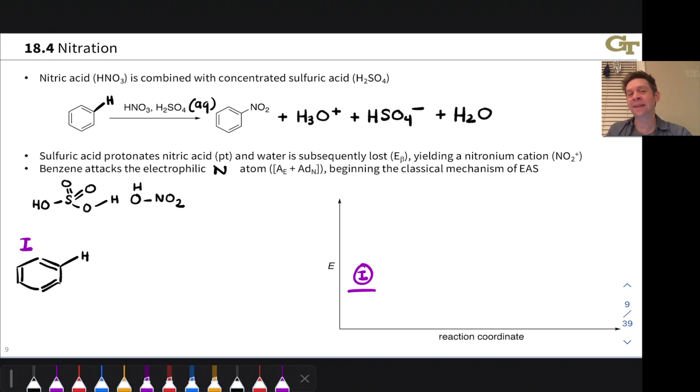So what is the active electrophile, and how is it generated? This is typically the first question we ask in thinking about this reaction mechanistically. It's kind of interesting too, right? Because we've got two acids in here. We've got nitric acid and sulfuric acid. Sulfuric acid, as it turns out, is quite a bit stronger than nitric acid.